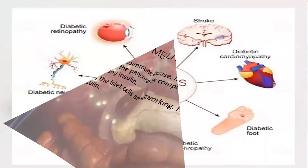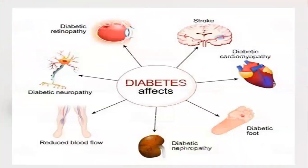Diabetes majorly affects three organs: diabetic retinopathy, diabetic neuropathy, and diabetic nephropathy — meaning it affects the eye, the CNS/brain, and the kidney. Other than this, it also affects the heart, causes reduced blood flow, and can cause edema.